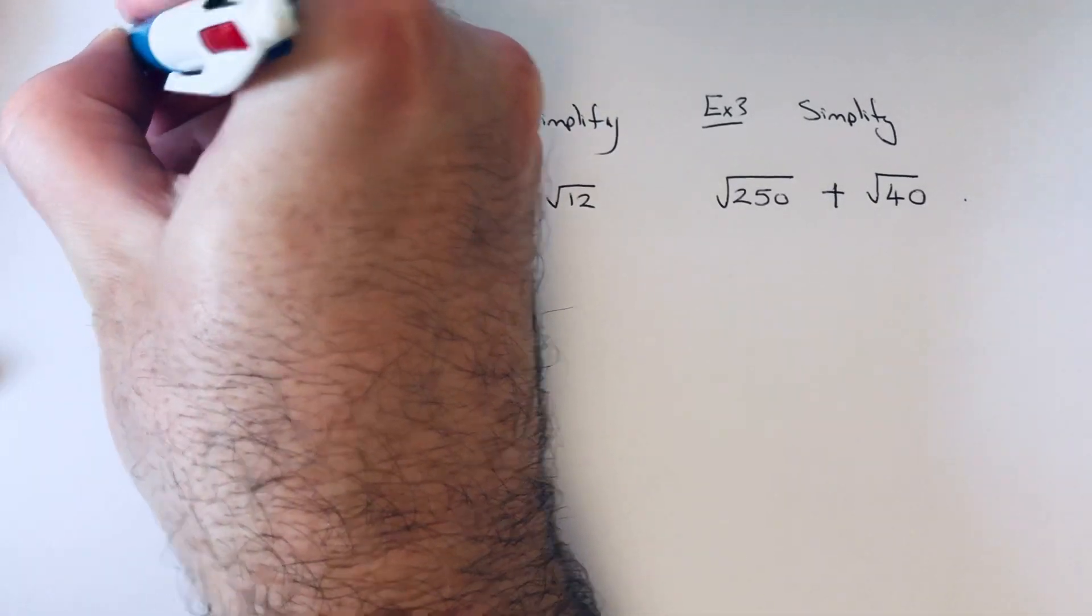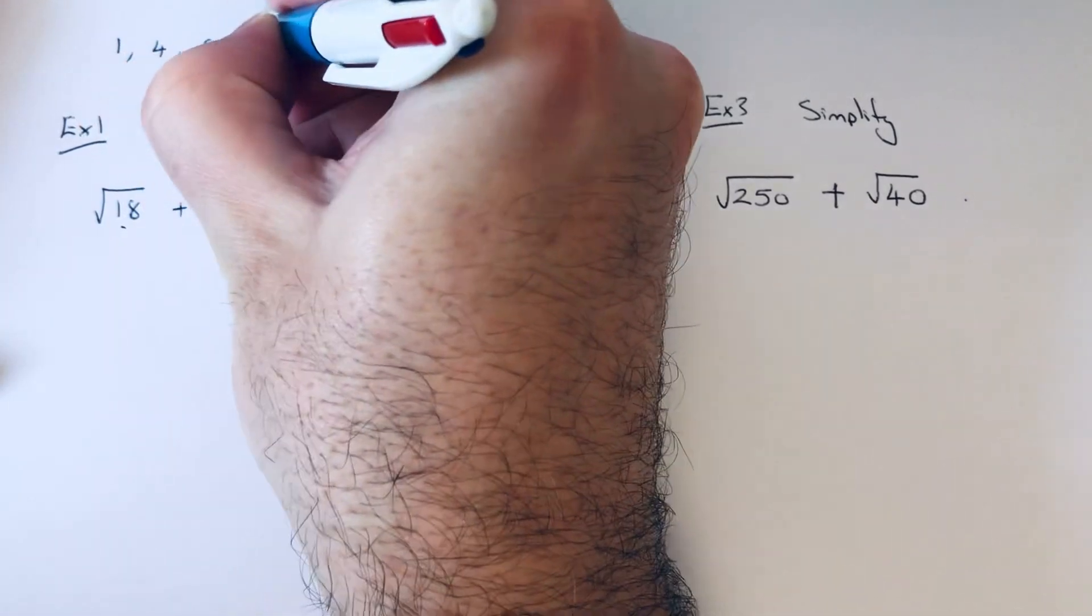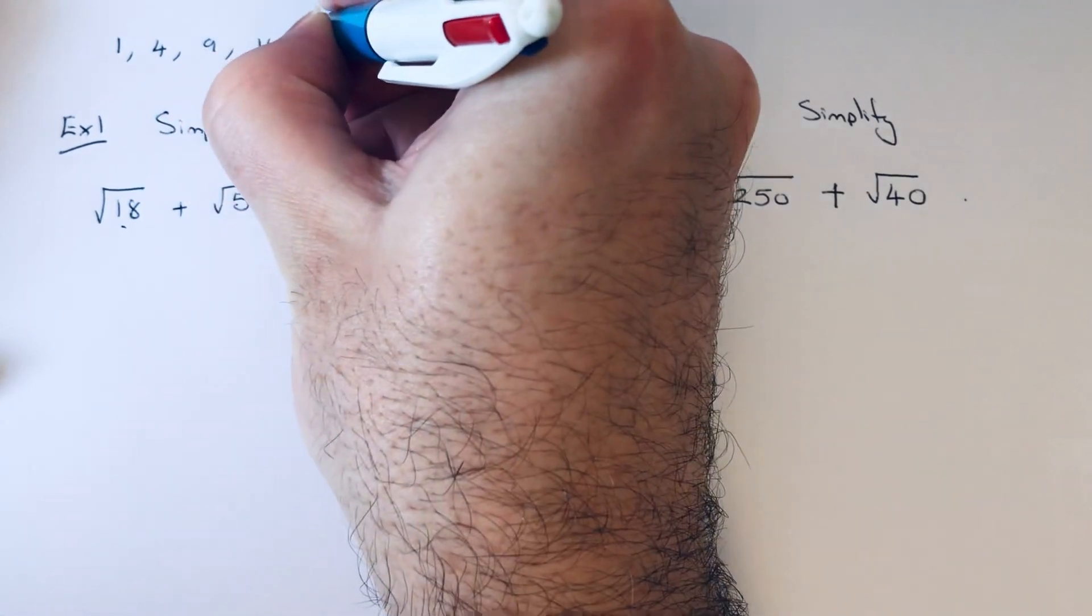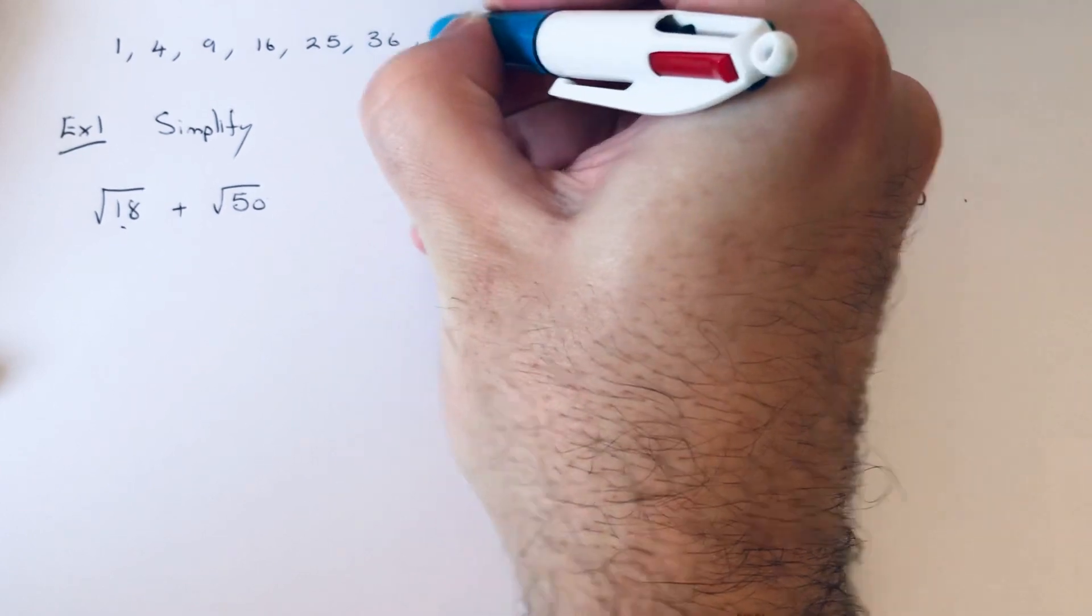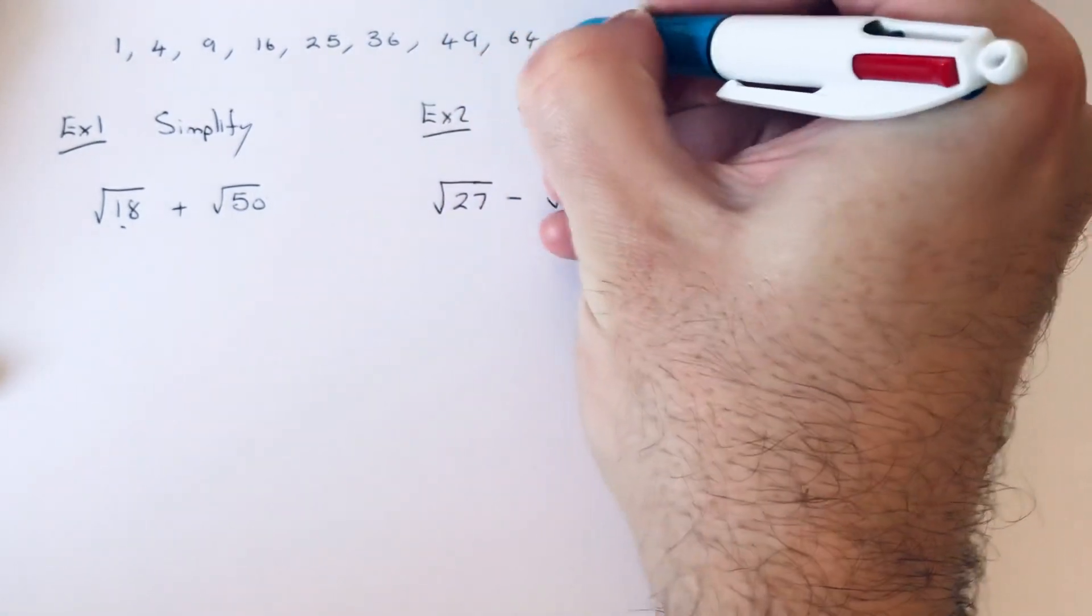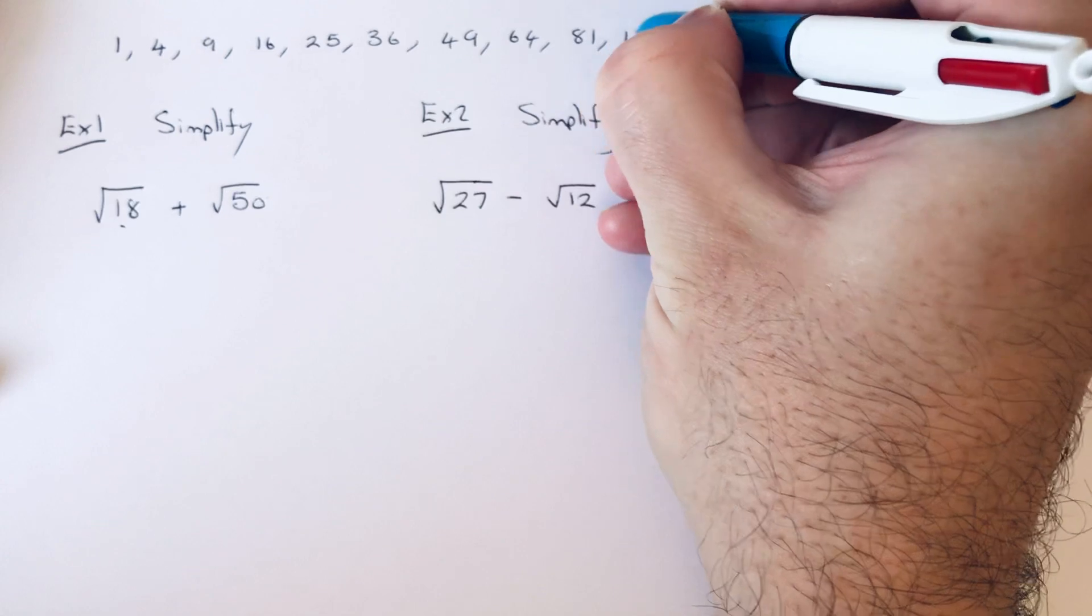So 1 times 1 is 1, 2 times 2 is 4, 3 times 3 is 9, 4 times 4 is 16, 5 times 5 is 25, 6 times 6 is 36, 7 times 7 is 49, 8 times 8 is 64, 9 times 9 is 81, 10 times 10 is 100.